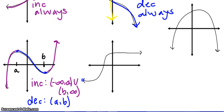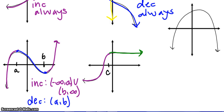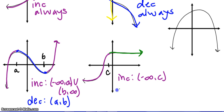Moving on — as we move across our graph, we're going up, increasing until we get to about this point. And then our graph is not going up, nor is it going down, which means that our graph is being constant. For notation's sake, we'll put a C right there. So we would say increasing from negative infinity until C, and then constant going from C to infinity.